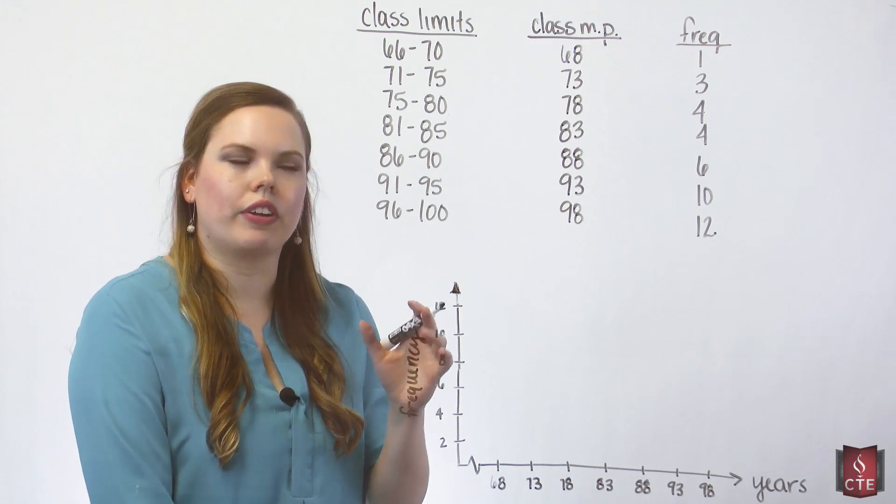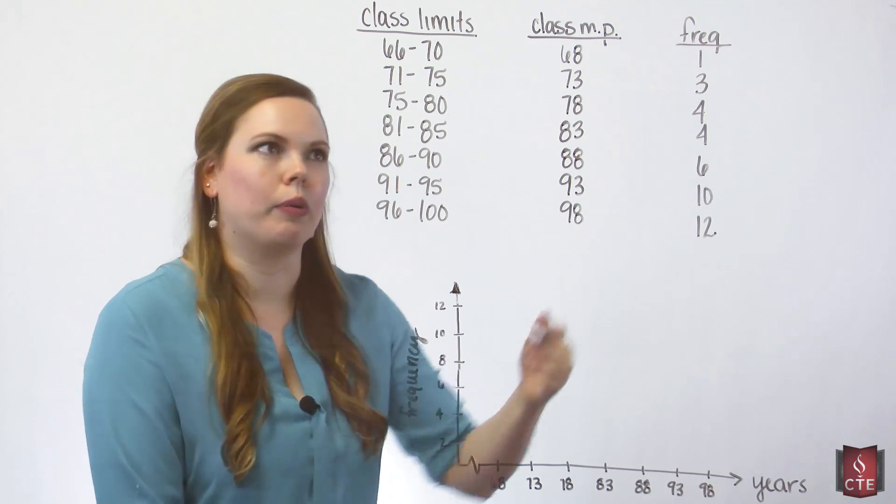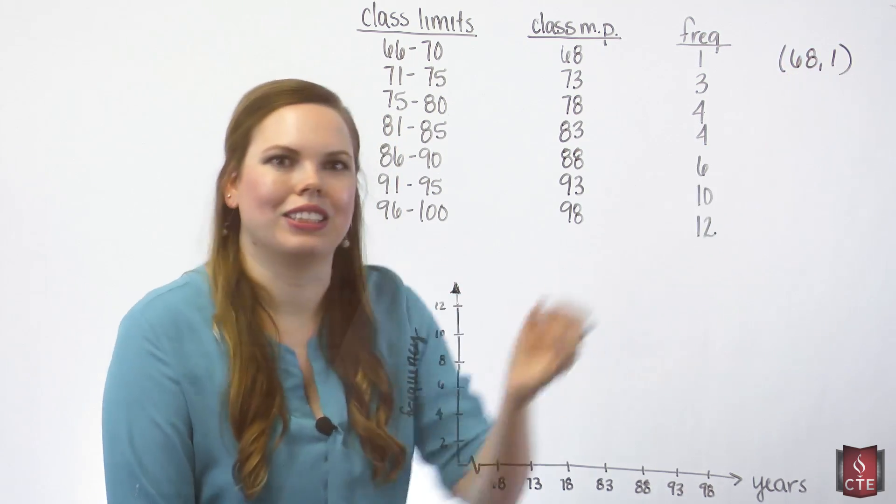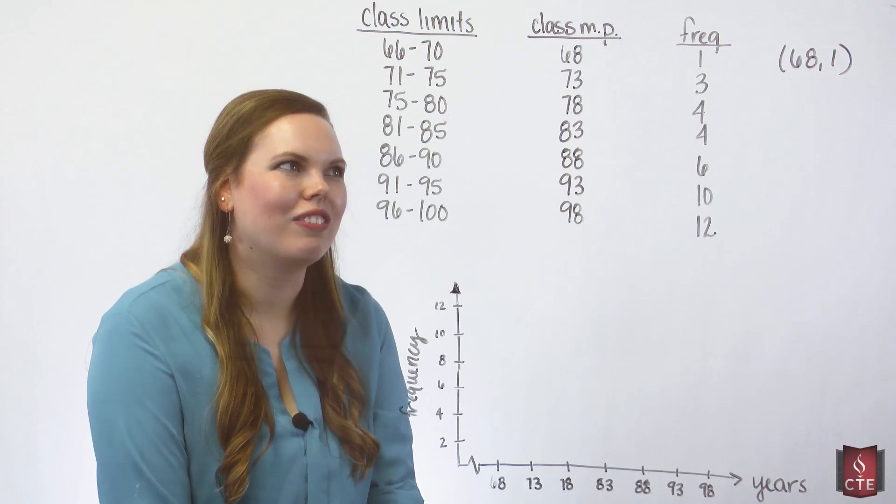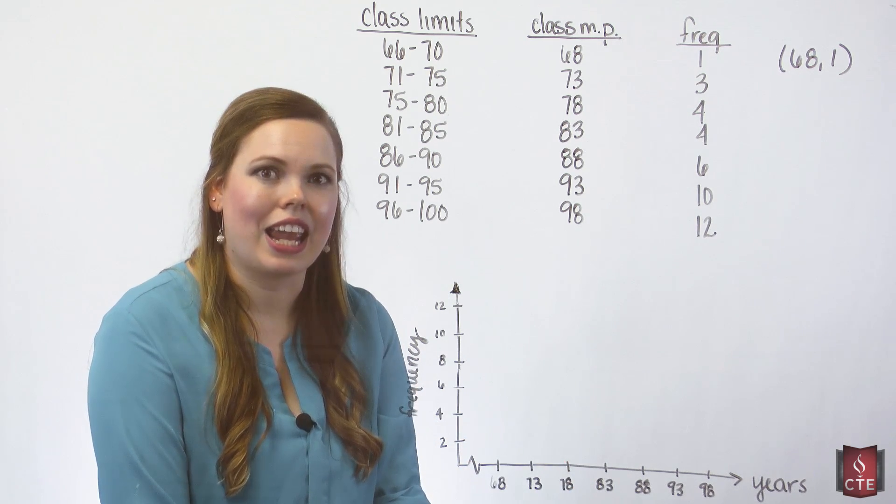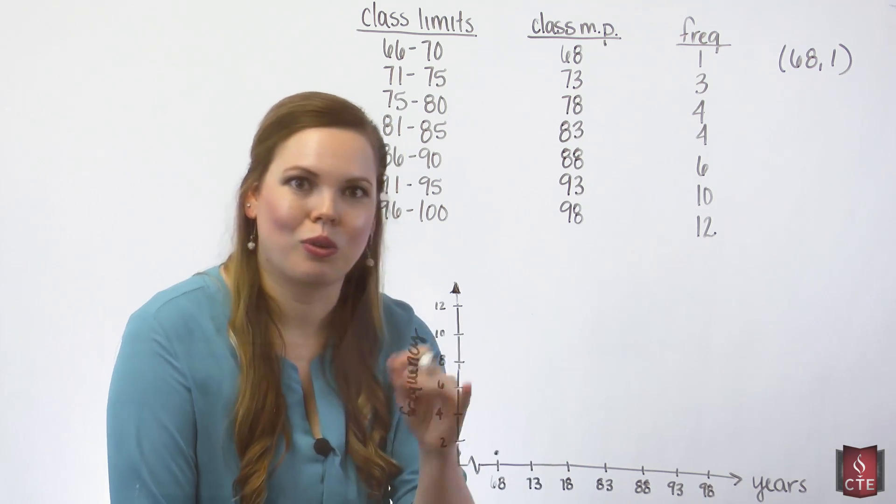And you can think of your first point on the graph as a coordinate point using your class midpoint and your frequency of that class. So our first point on our frequency polygon is going to be 68, 1. So go ahead and plot that on this coordinate plane.